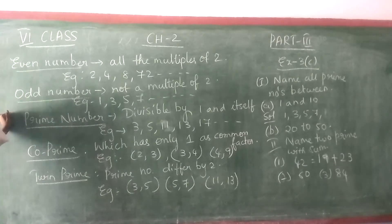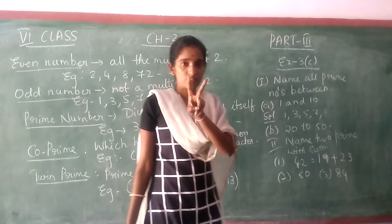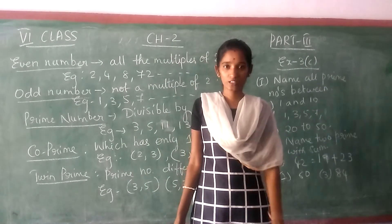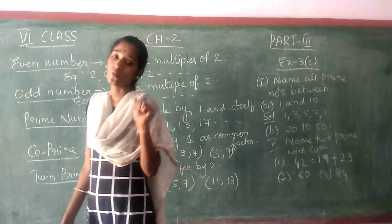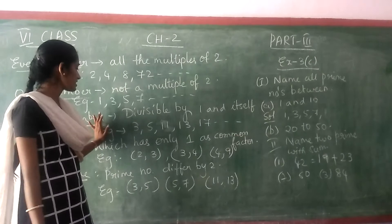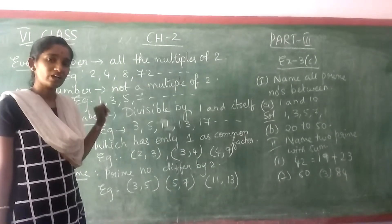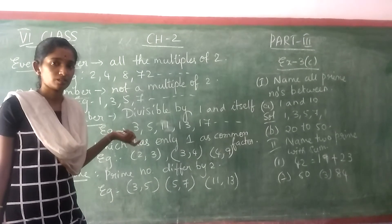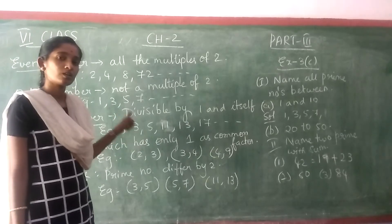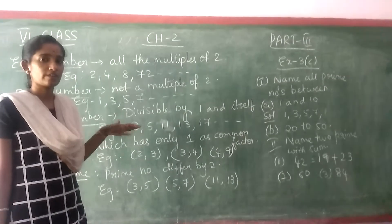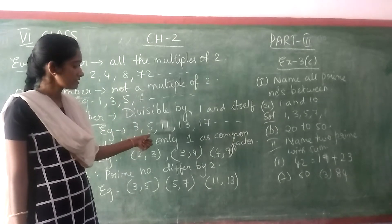Next is the prime number. A prime number is a number which is having only 2 factors. We learned in the previous class what factors are. Those 2 factors are 1 and the number itself. For example, 3 goes in the 1 times table as well as the 3 times table. Similarly, 5: 1 times 5 is 5, and 5 times 1 is 5 — so it is having only 2 factors, that is 1 and the number itself.